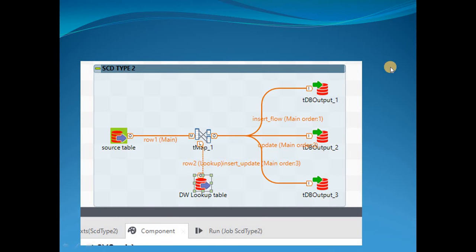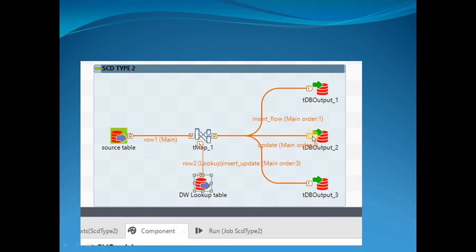Coming to the Talend flow: we have three output columns. We read from the source table and do a lookup to the data warehouse table to decide which records are updates or inserts. There are three output rows: one for insert, one for update, and one for insert-update.